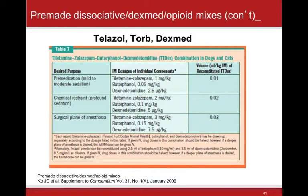Medetomidine and dexmedetomidine will both cause problems with pulse oximeter monitoring if used at high doses — vasoconstriction makes reading difficult. Try backing your dose down if you have trouble monitoring. If you have trouble monitoring your patients, back down both those drugs and ketamine a little bit, starting with the alpha agonist.